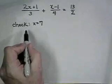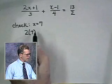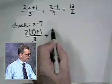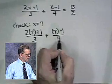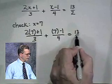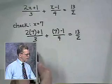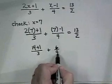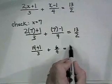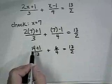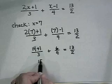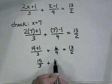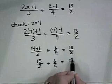We really need to check this to make sure it checks in our original equation. Going back, we'll write 2(7+1)/3 plus (7-1)/4 equals 13 halves. That gives us 15/3 plus 6/4 equals 13 halves.